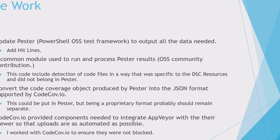The first thing we did was update Pester. It didn't have all the data we needed to generate a good code coverage report — it only had missed lines, but to generate a good report we needed hit lines. We also added a common module to run our tests in the DSC resources, since each resource had customized code. This included code to detect code files so we could automatically configure Pester for code coverage. We added a plugin model for resources that already had this code, keeping it separate from Pester since it was specific to DSC resources.